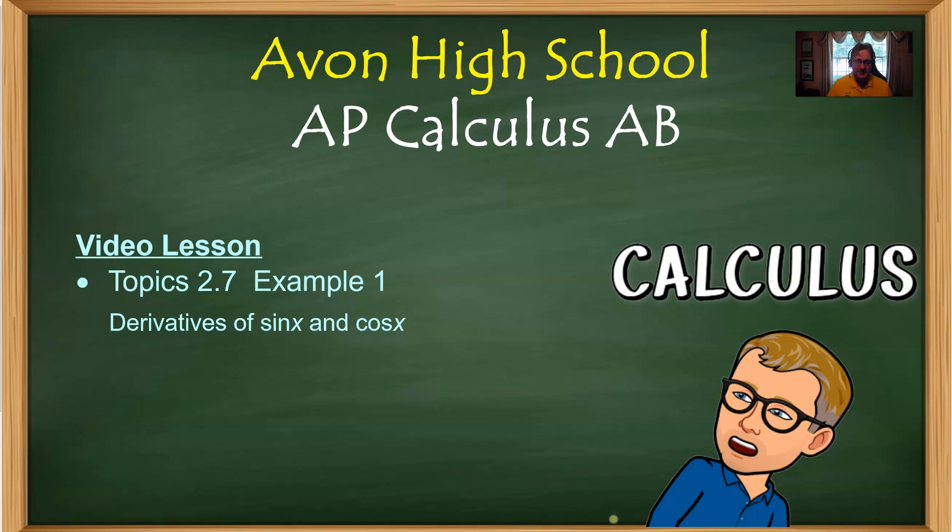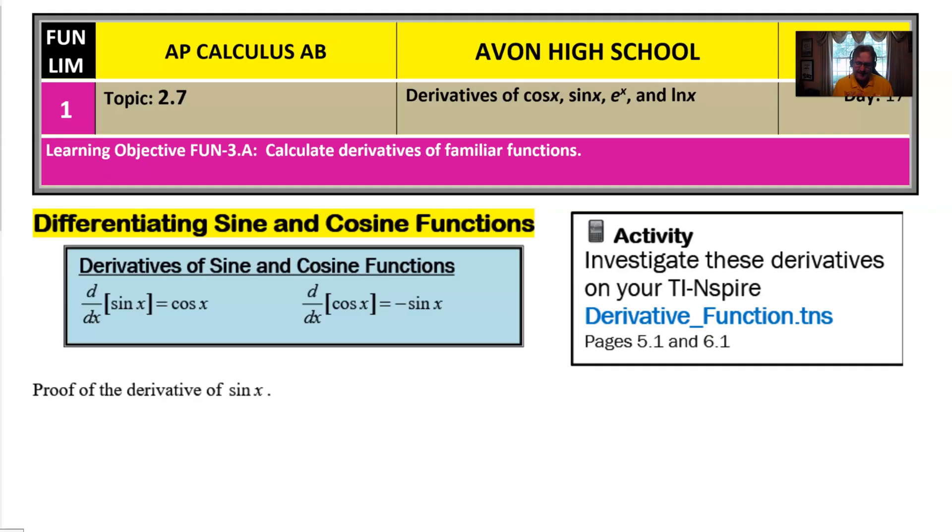So what are we looking at for those derivatives? Well, I could make this video really short and just simply say there they are. They're in the blue box. The derivative of sine is cosine and the derivative of cosine is negative sine. Video over. Go do your homework. But I don't think that's a great approach to this because I think the purpose of this video is more to kind of explain why those two things are true. And I've got a variety of things to share with you. This is a great show today.